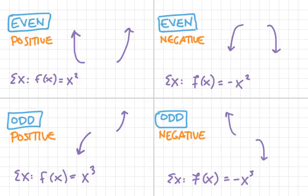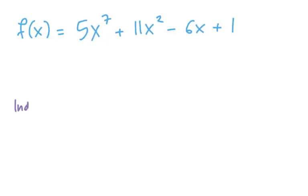And I'll go back to some normal paper here. So let's say that we were given the function f(x) = 5x^7 + 11x^2 - 6x + 1. And we are asked about the end behavior. So indicate end behavior.